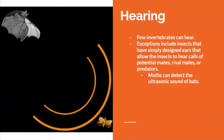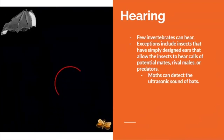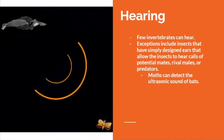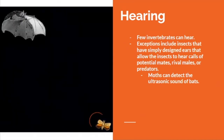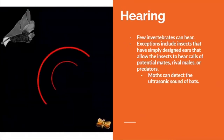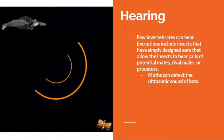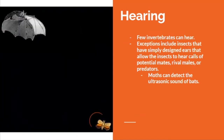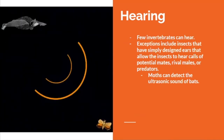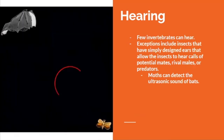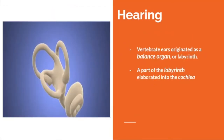For hearing: few invertebrates can hear. Exceptions include insects that have simply defined ears that allow them to hear calls of potential mates, rival males, or predators. For instance, moths can detect the ultrasonic sounds of bats.